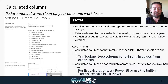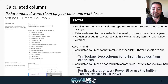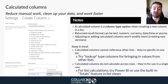A couple of things to keep in mind: your calculated columns cannot reference other lists, so you cannot do a cross-list or cross-site calculation. You also can't go across rows — your calculated column is a per-row occurrence, meaning you couldn't do a total for the entire list without using something like the total function in list view settings or something like Power BI.